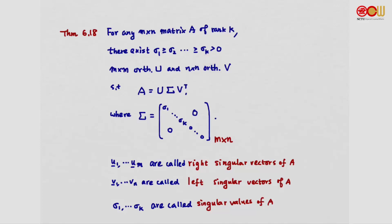More specifically, for any m by n matrix A of rank k, we can find k positive numbers sigma-1 through sigma-k in non-increasing order, an m by m orthogonal matrix U, and an n by n orthogonal matrix V, such that this holds. The sigma matrix is m by n, with the k positive numbers on the diagonal. The column vectors of U are called the right singular vectors of A, and the column vectors of V are the left singular vectors of A.